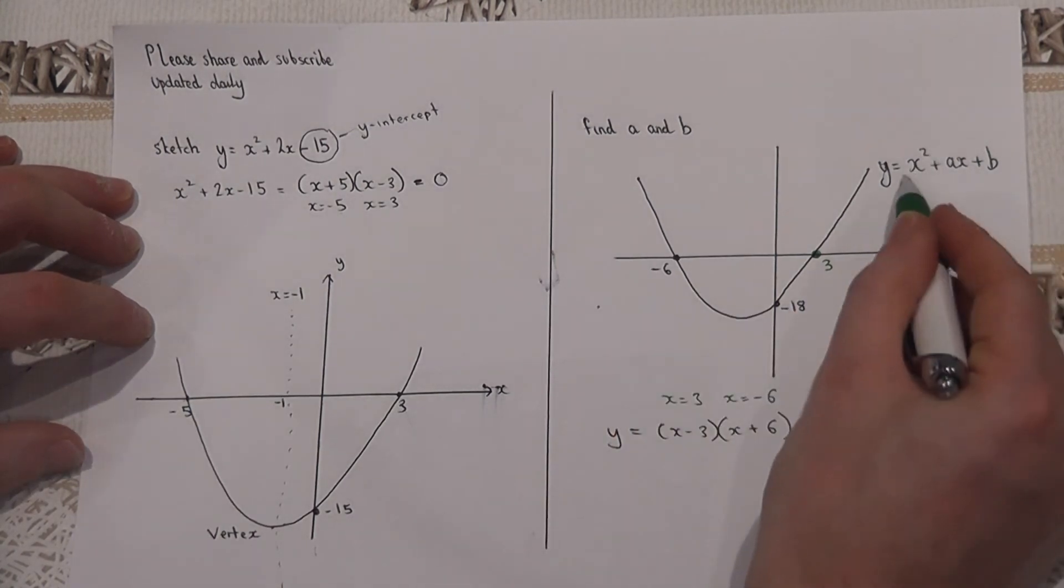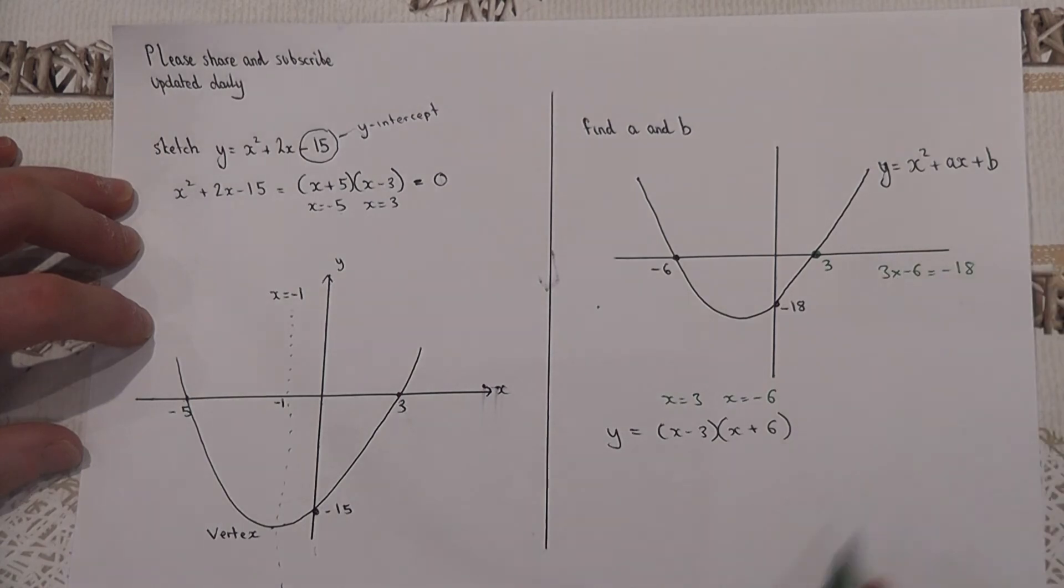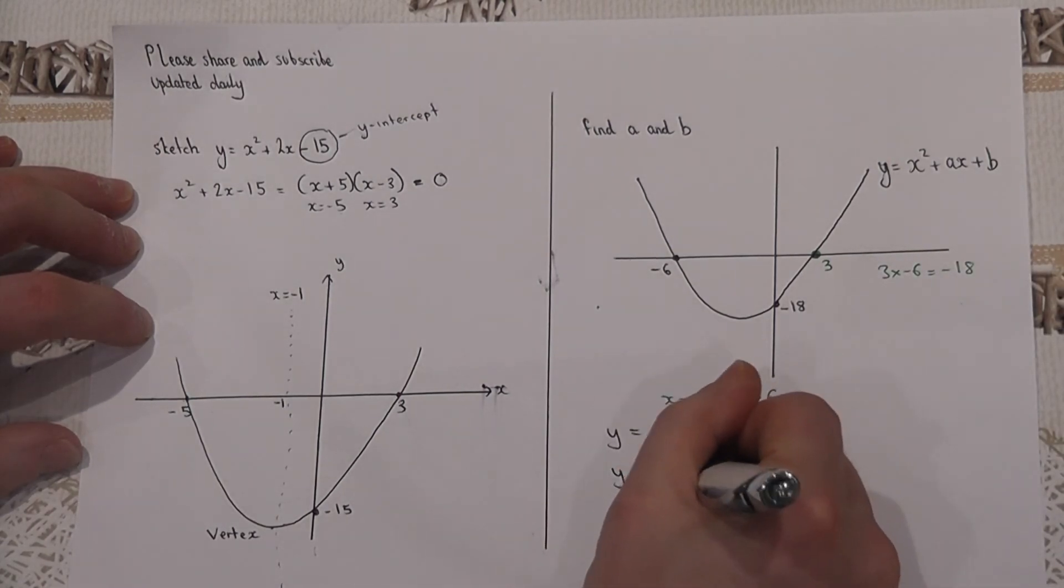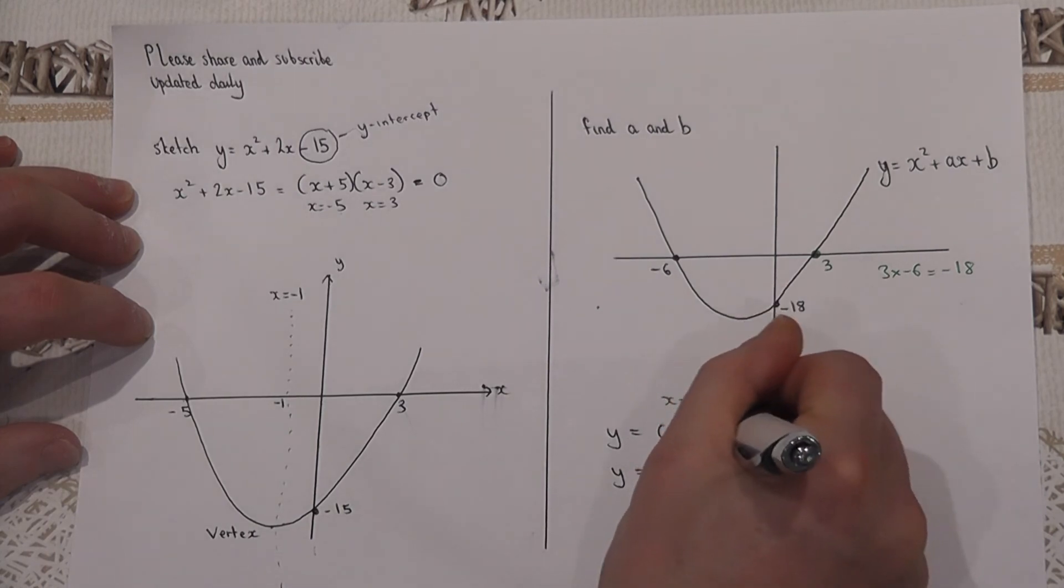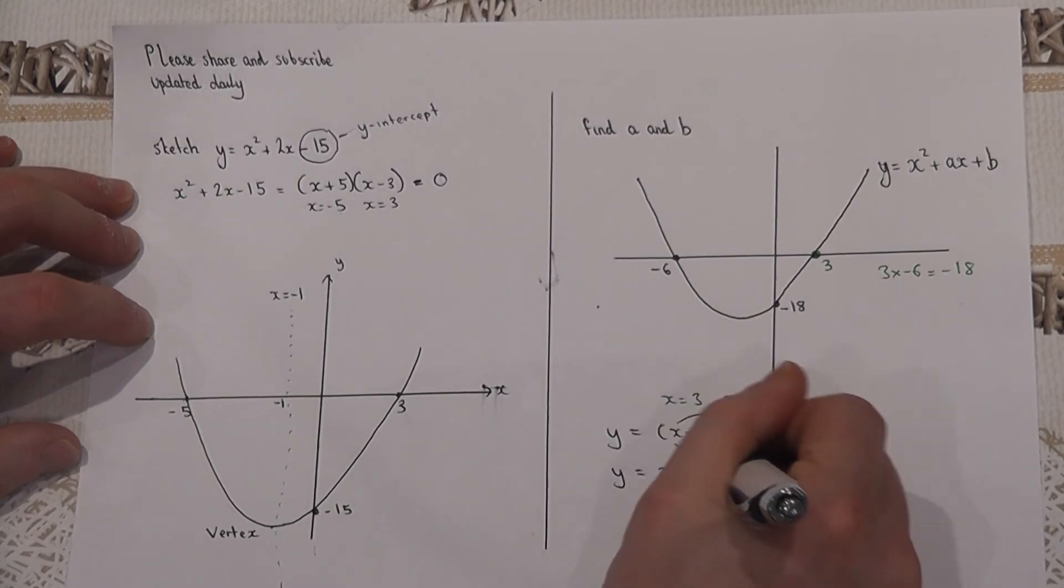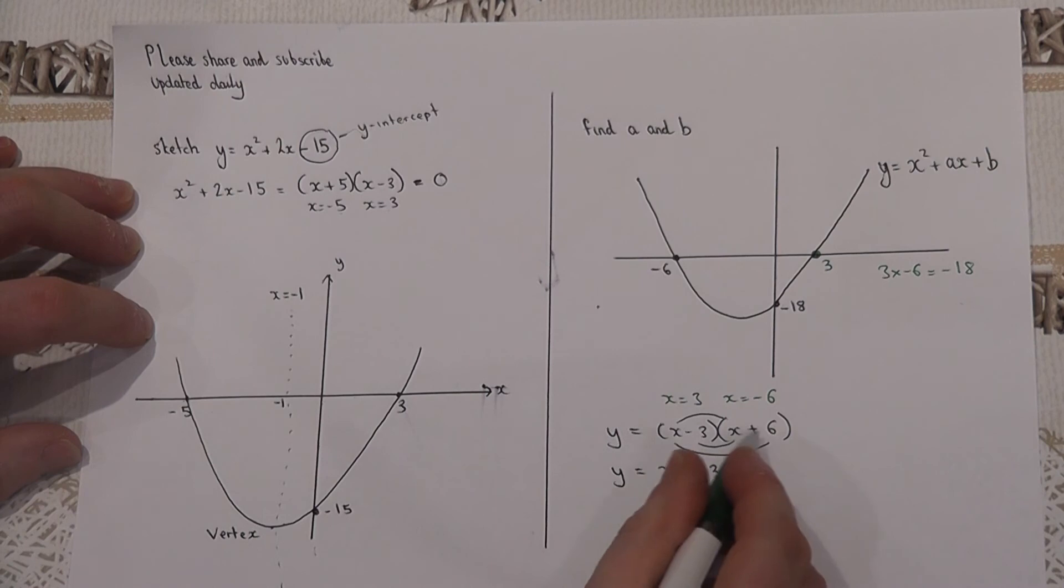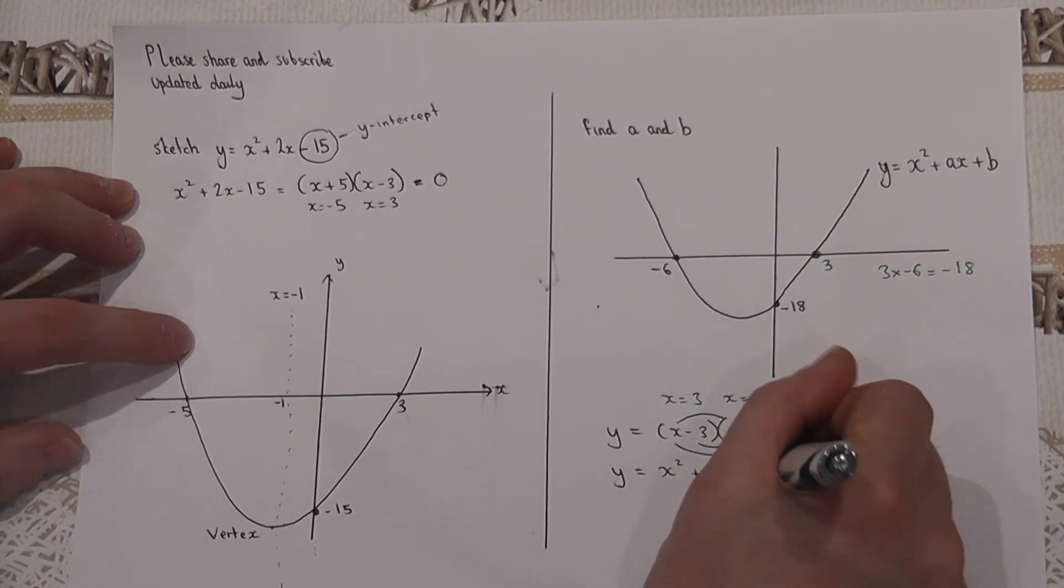Then to find it in this form, and what is a and what is b, I can expand: x squared minus three x plus six x goes to positive three x, and minus three times six is minus 18.